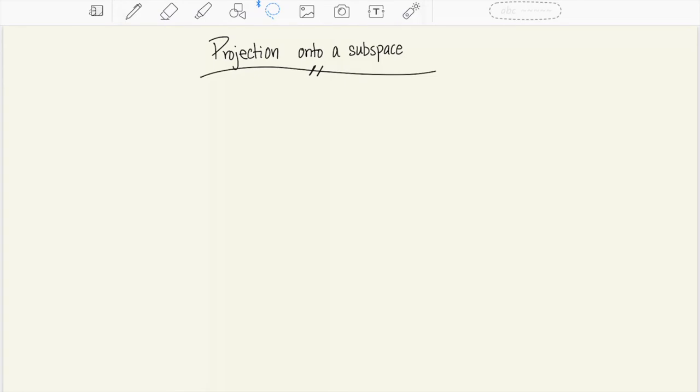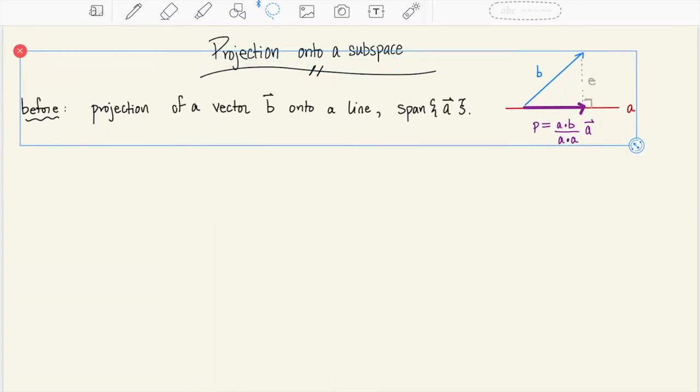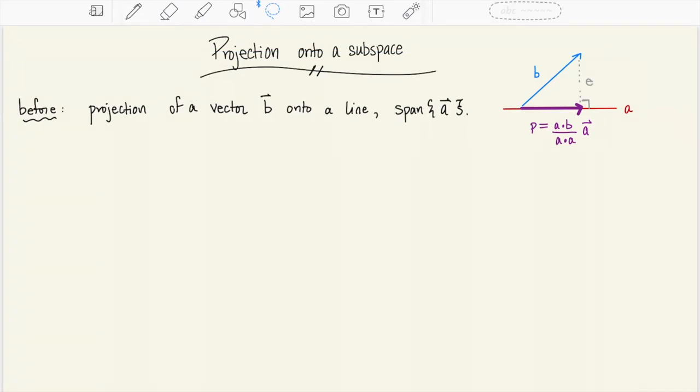In this video we're going to be talking about projection onto a subspace. In the last couple of videos we looked at projection of a vector b onto a line and that line is the span of some vector a.